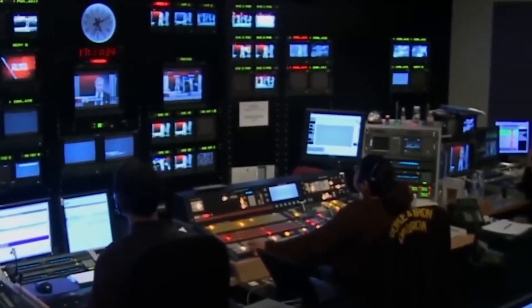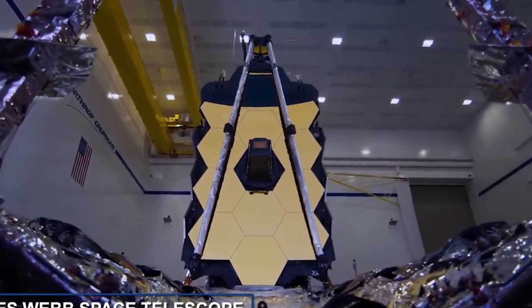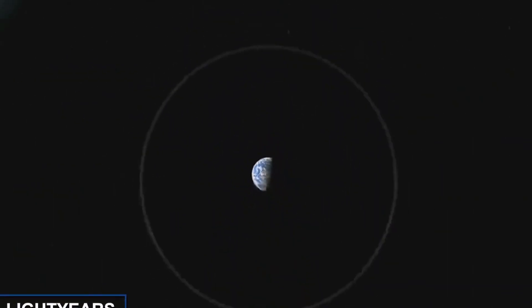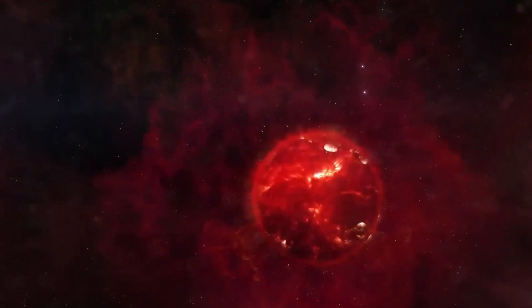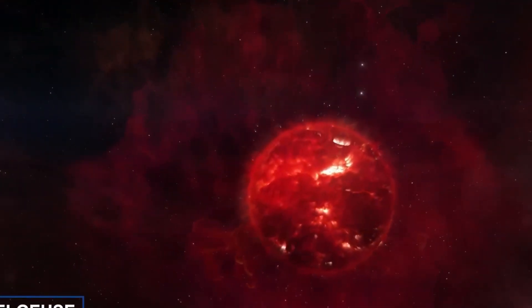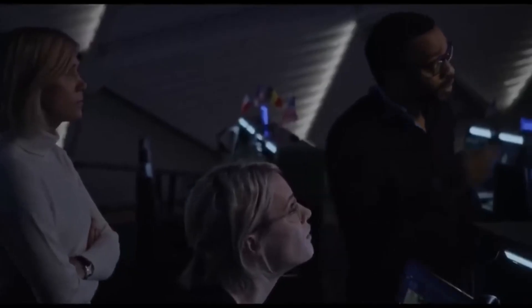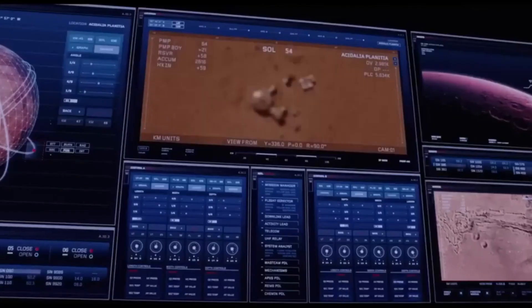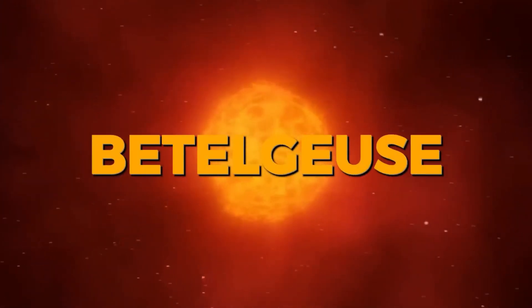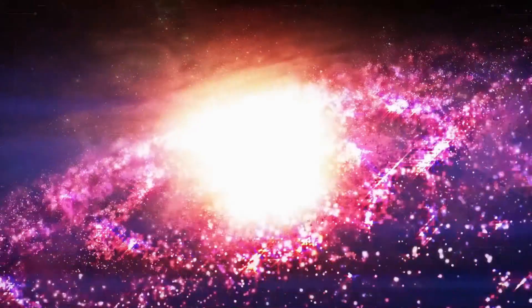Betelgeuse, a red star, loses about one solar mass every 10,000 years as material is ejected unevenly from the star in all directions, resulting in a nebula surrounding the red star. The nebula surrounding Betelgeuse is roughly 30 astronomical units (AU), or 30 times the distance between the sun and Earth, and it is 250 times larger than the star itself at its center.